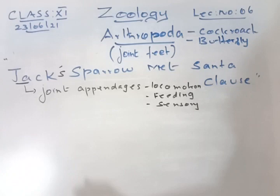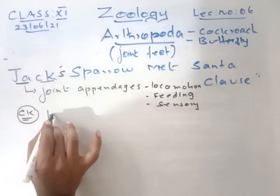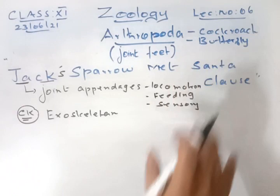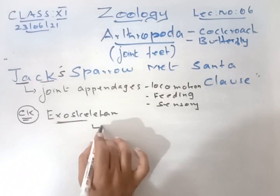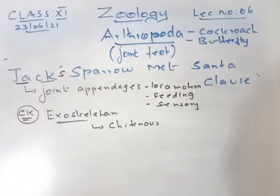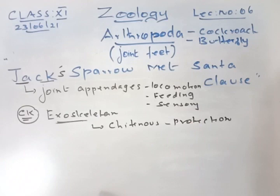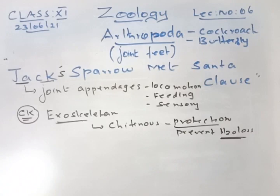CK stands for chitinous exoskeleton. We humans have an endoskeleton, but arthropods like cockroach and butterfly have a hard outer skeleton with a soft inner body — the outer part is covered by an exoskeleton made of chitin, which provides body protection and prevents water loss.